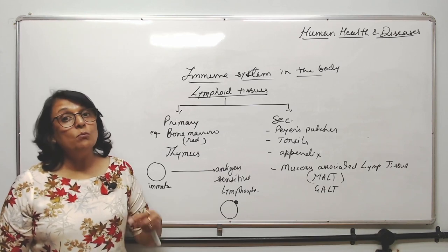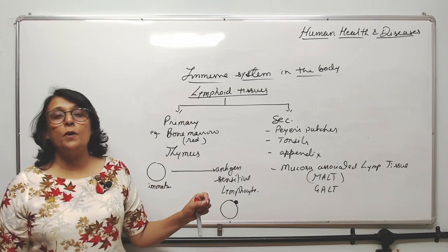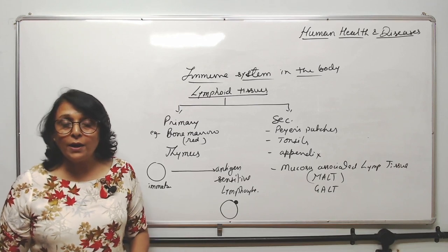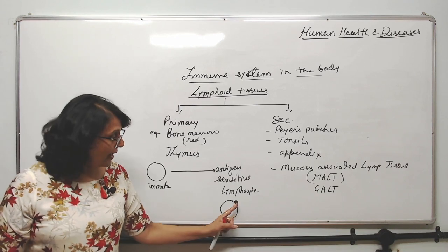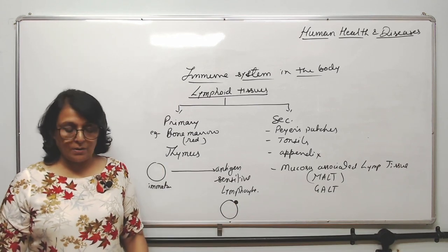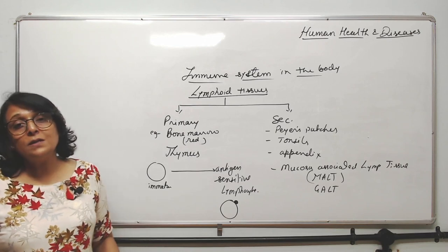When it passes through primary lymphoid tissue it becomes antigen-sensitive, and moving forward it will help in the formation of antibody against only one particular antigen.